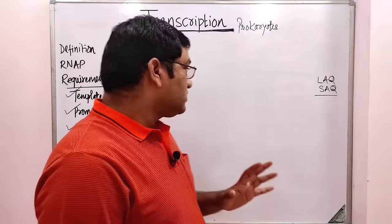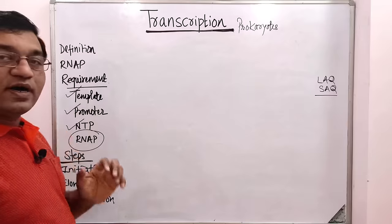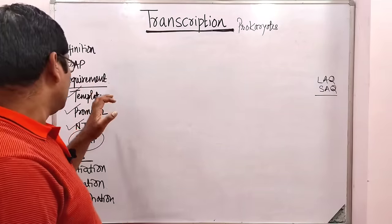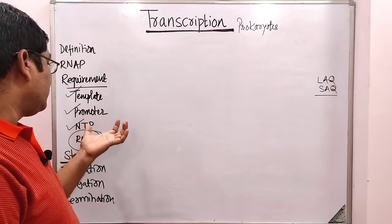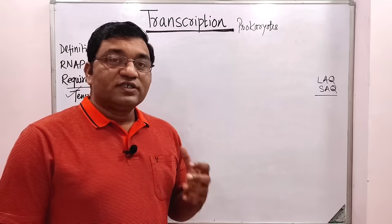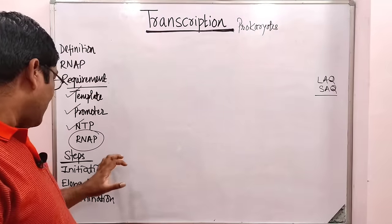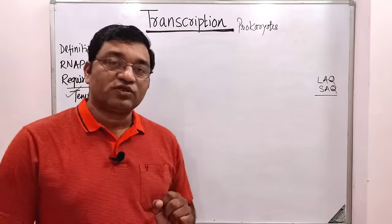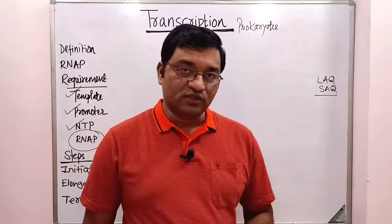We will discuss this topic under the headings of: definition, what is the role of RNA polymerase, different units of RNA polymerase, what do you mean by template, what do you mean by promoter region, what is the requirement for transcription to proceed, and various steps in the transcription process — that is initiation, elongation, and termination.